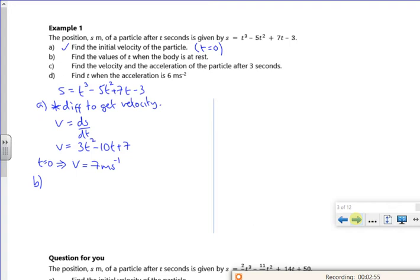Part b says, find the values of t when the body is at rest. So the body is at rest when the velocity is 0. So what I'm saying is my 3t² - 10t + 7 is equal to 0.